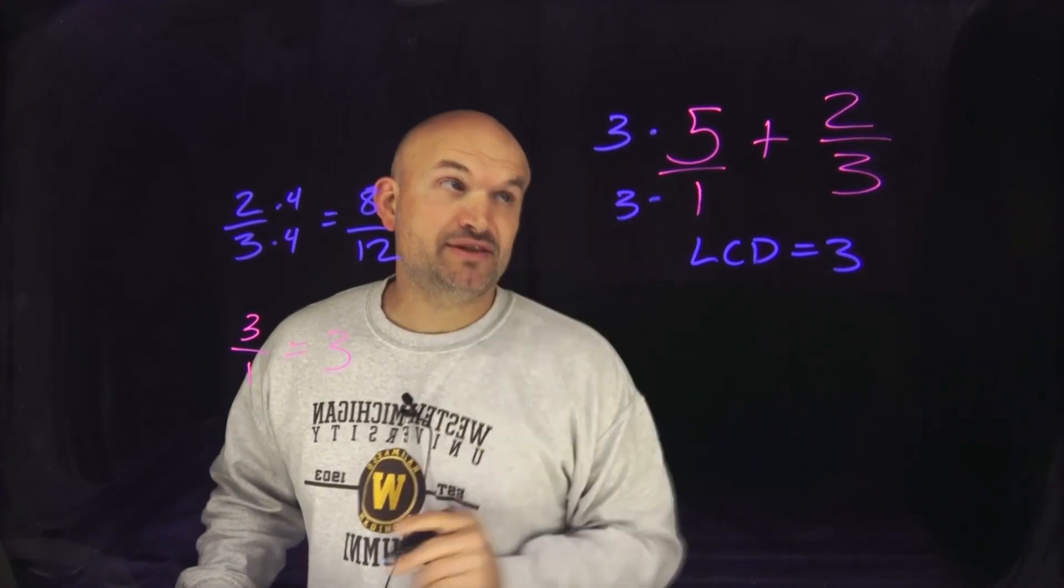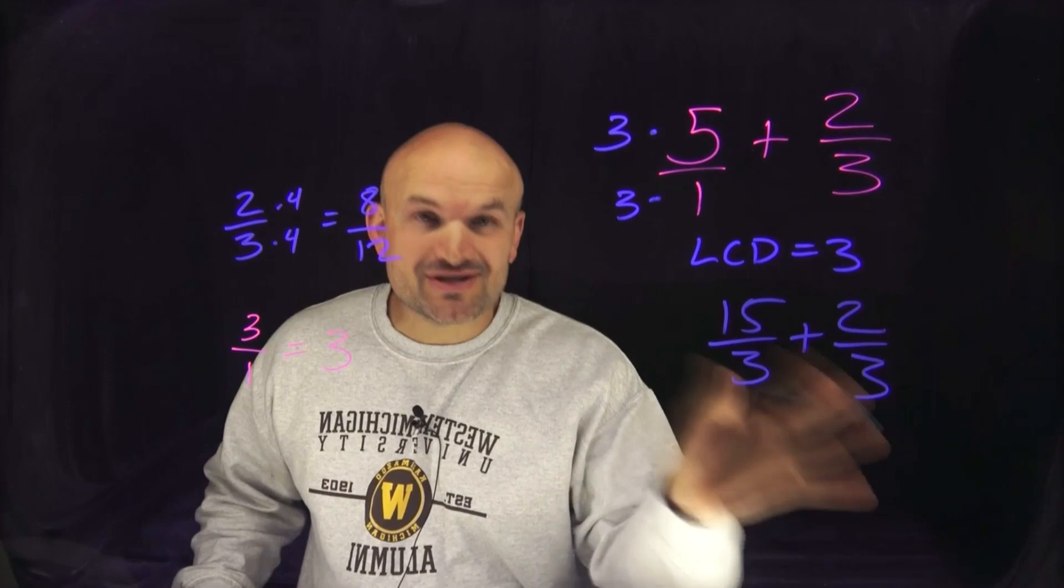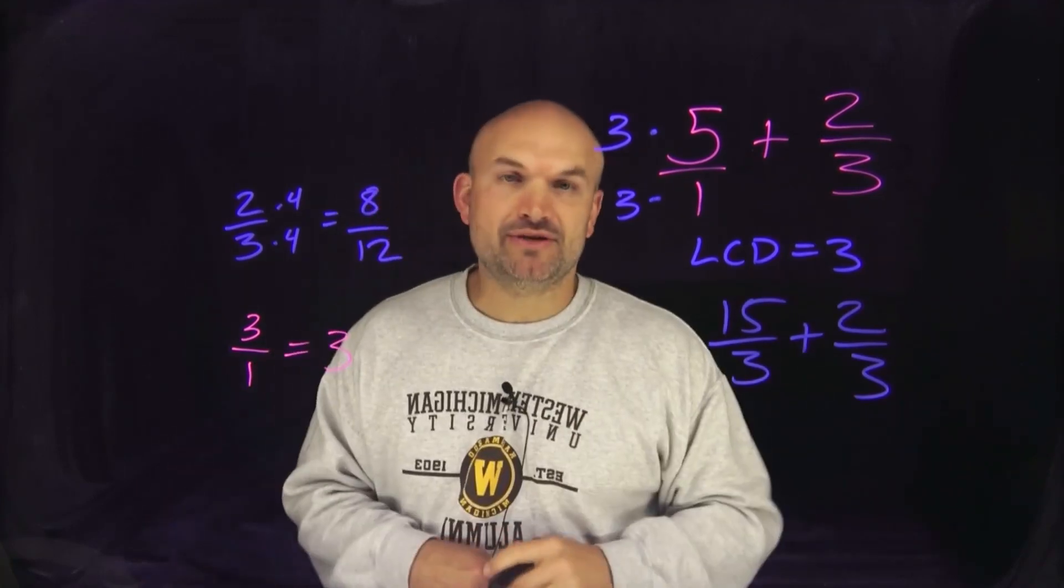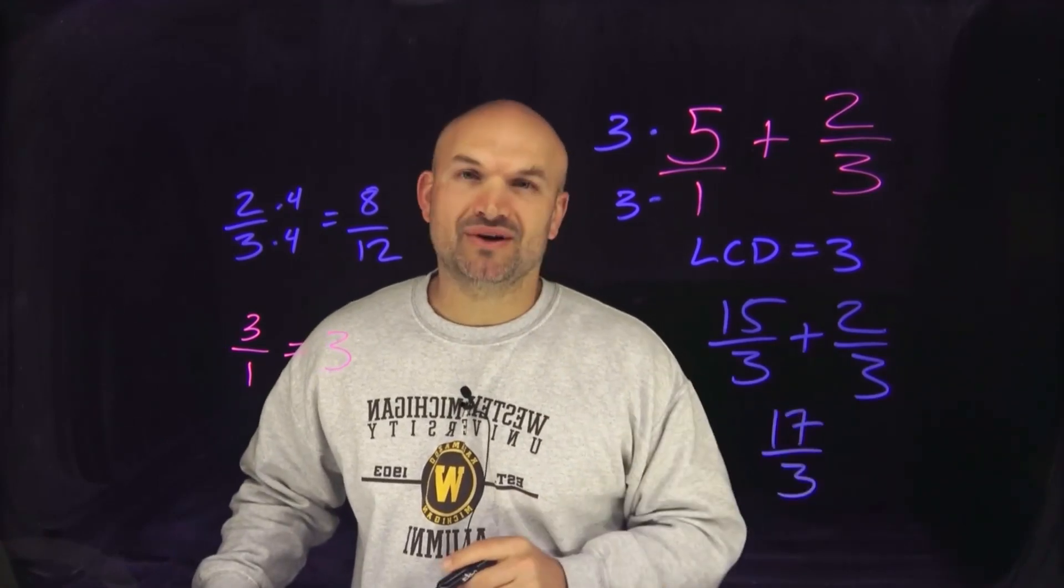So in this case now I'm going to have 15/3 plus 2/3. And now you can see that my denominators are exactly the same, so all I need to do is apply my operation to my numerator and leave my denominator alone. And we're all set.